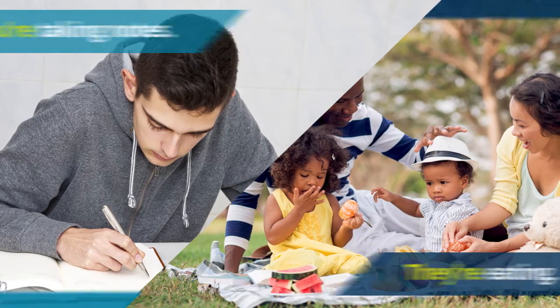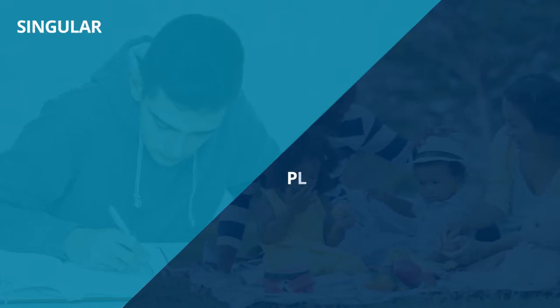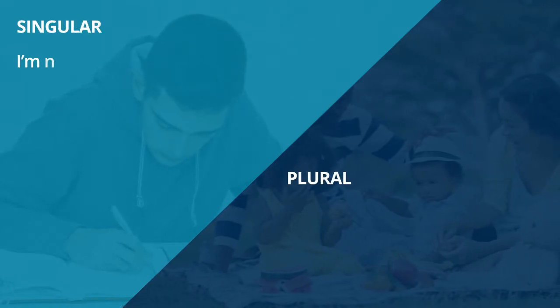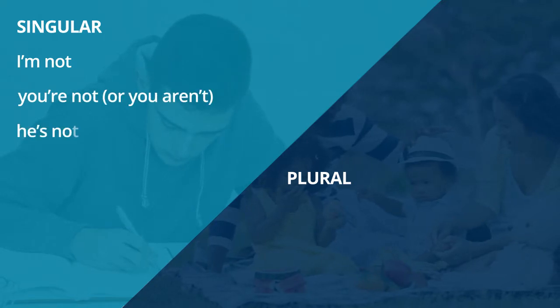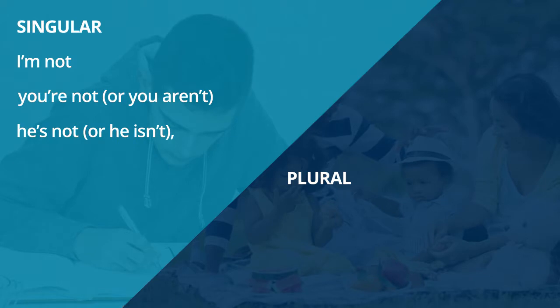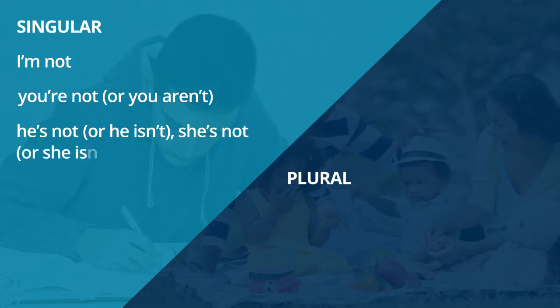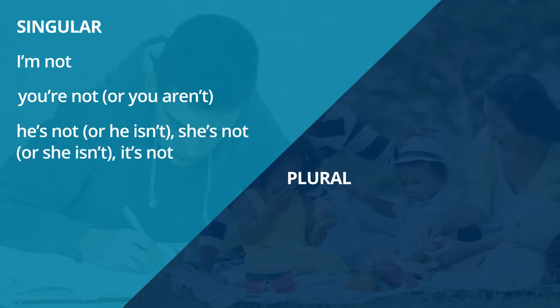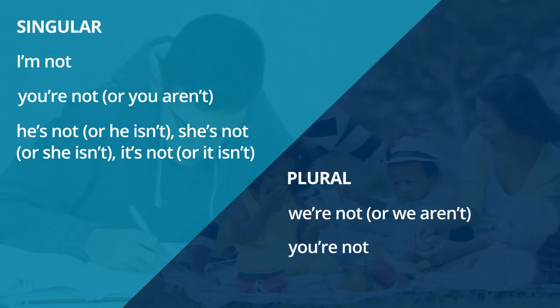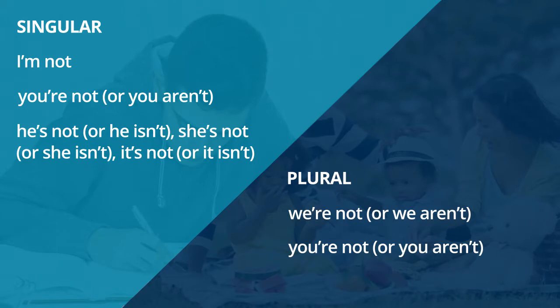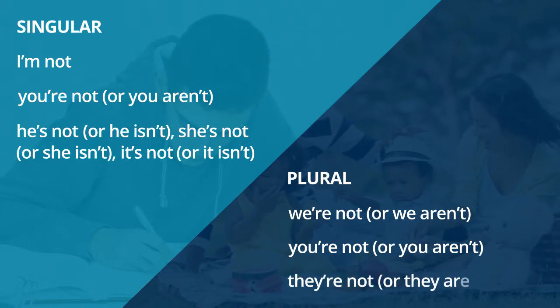For formal situations, when you want to show that someone is not doing something, use the following negative contractions: I'm not; you're not or you aren't; he's not or he isn't; she's not or she isn't; it's not or it isn't; we're not or we aren't; you're not or you aren't; they're not or they aren't.